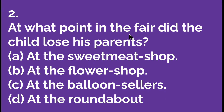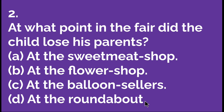At what point in the fair did the child lose his parents? Option A: at the sweet meat shop. Option B: at the flower shop. Option C: at the balloon seller. Option D: at the roundabout. The right answer is D — at the roundabout. So let's move to the next question.